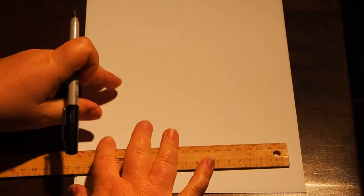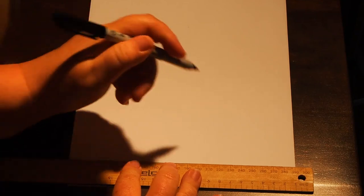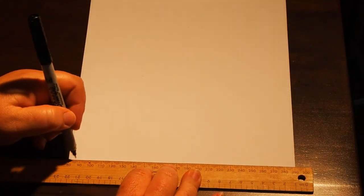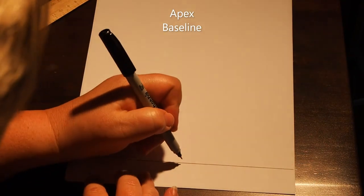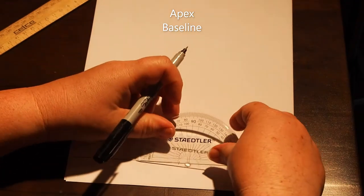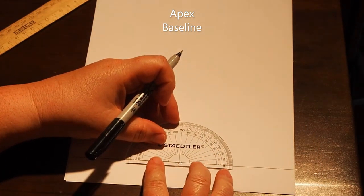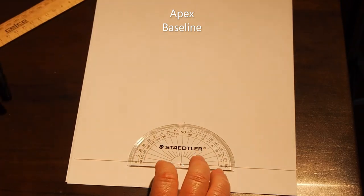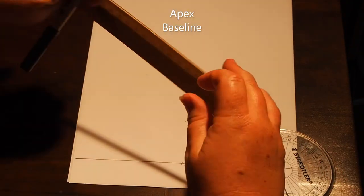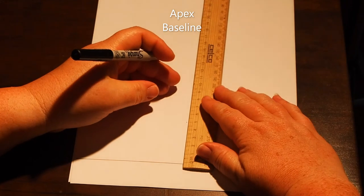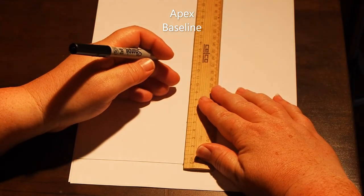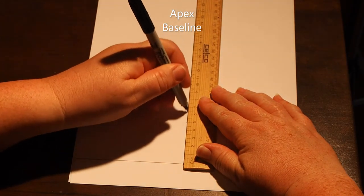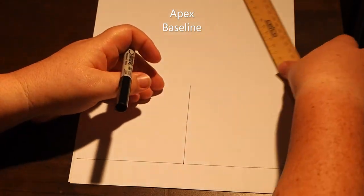Take a piece of paper and rule a straight line at the bottom of the page, just up from the bottom a little. This is the baseline. Put a dot at approximately halfway along the line. This is the apex point. Place the crosshairs of the protractor at the apex and make a dot at the 90 degree mark. Using your ruler, join the apex line and the 90 degree dot with a line that is 10 centimeters long.